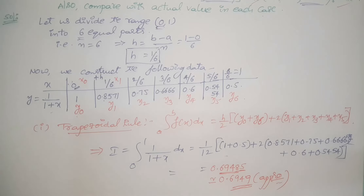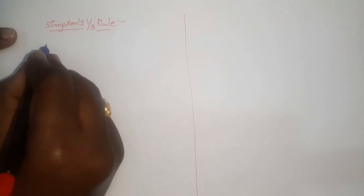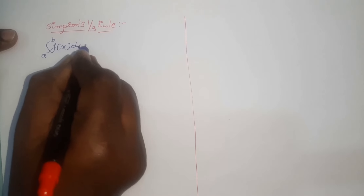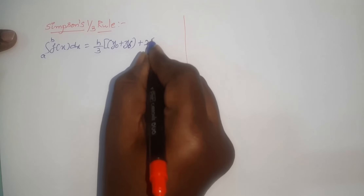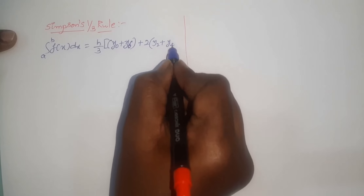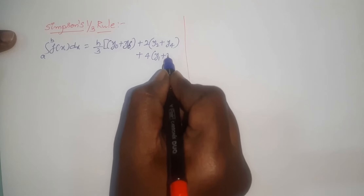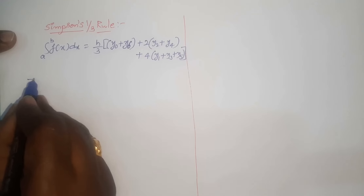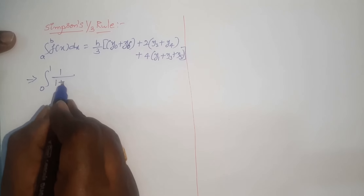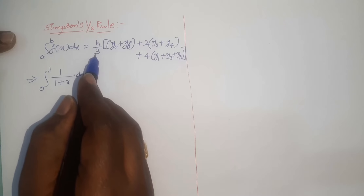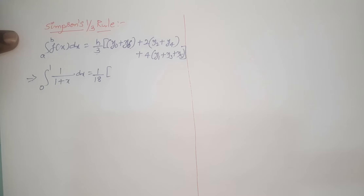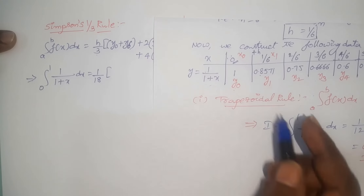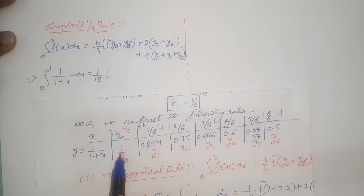Now we evaluate the definite integral using Simpson's one-third rule. According to Simpson's one-third rule, the integral from a to b of f(x) dx equals h by 3 multiplied by the sum of first and last ordinates y0 plus y6, plus 2 into the sum of even ordinates y2 plus y4, plus 4 into remaining ordinates y1 plus y3 plus y5. Replace all values: a to b is 0 to 1, and the table values are 1 and 0.5.